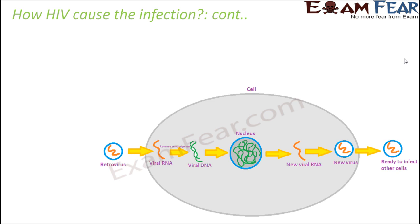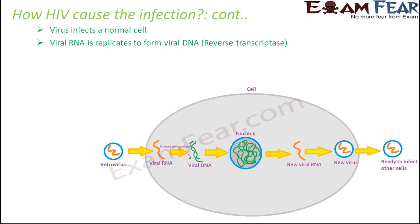This diagram explains the entire process of HIV infection. The HIV virus infects a normal cell — the oval structure represents the cell and this is the retrovirus. It introduces the viral RNA inside the cell. The viral RNA is then replicated to form viral DNA through reverse transcription, in the presence of the enzyme reverse transcriptase.